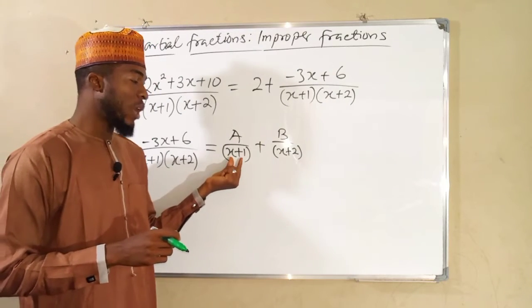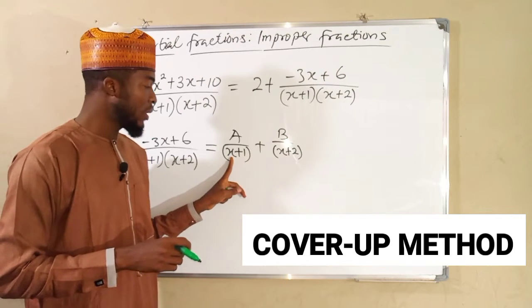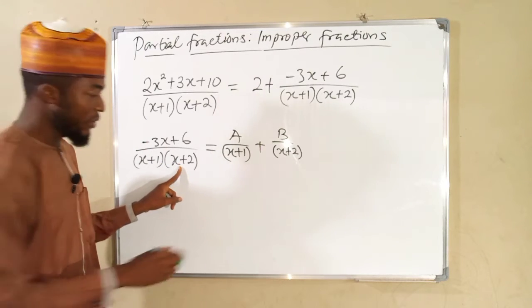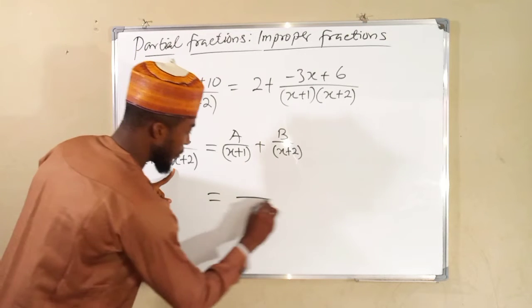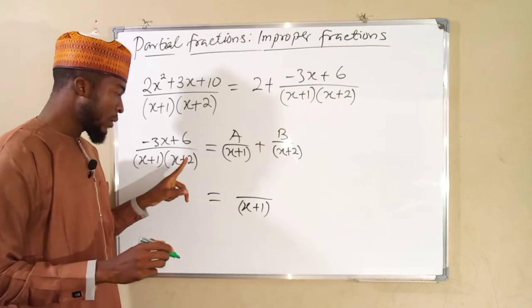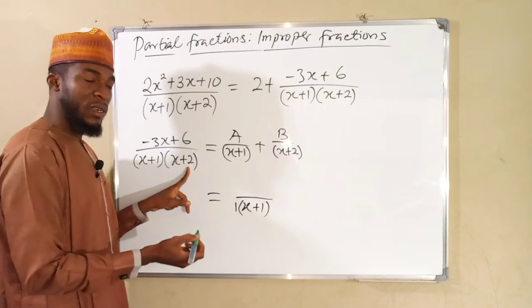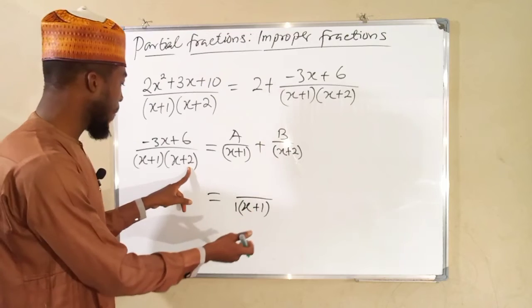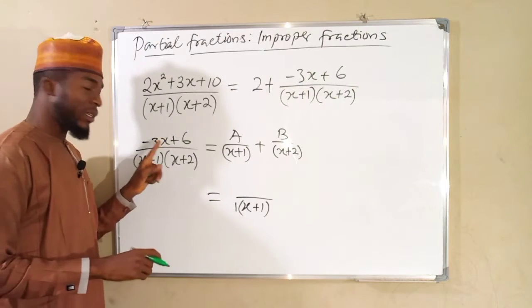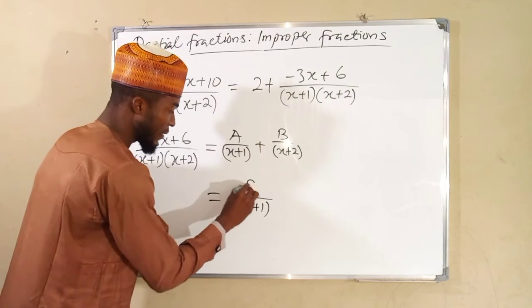So let me start with this factor. I want to transform this factor into 0. Therefore, the value of x must be negative 1. That negative 1, I am going to substitute it here into the other factor. So this becomes x plus 1. So negative 1, positive 2 is going to be positive 1. So that 1 is going to be here, but it is not going to affect our factor. Then we are going to substitute that negative 1 to the top to obtain our numerator. Negative 1 times negative 3 is positive 3. Then positive 3 plus 6 is 9. So we have 9 here.